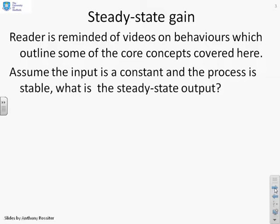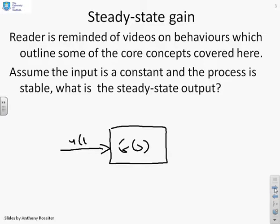Before we start, just a reminder of the basic assumption we're going to make. We've got some form of system here where there's an input going in to a process G of S. And there's my input U of T or U of S. And an output coming out.